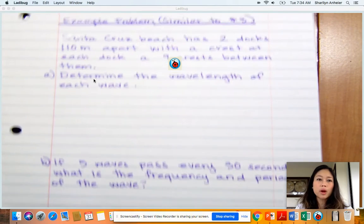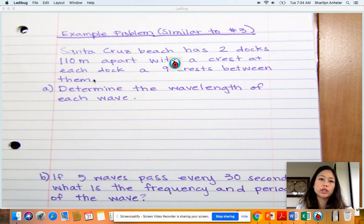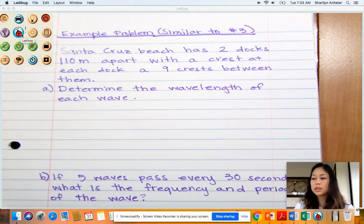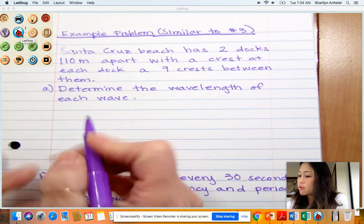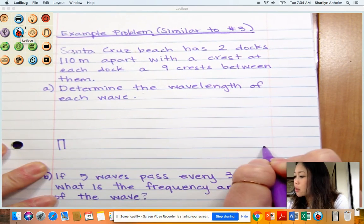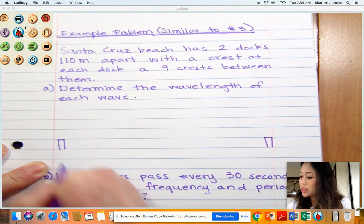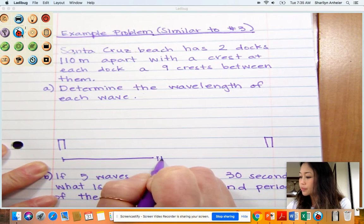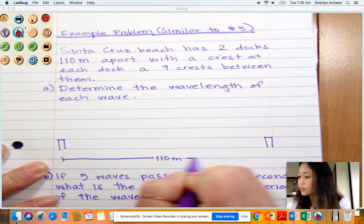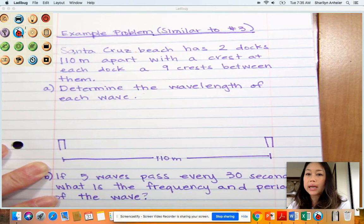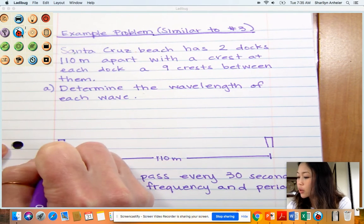Here's a problem I created very similar to number 3 on Worksheet 2. In this scenario we've got the Santa Cruz Beach with two docks 110 meters apart. A lot of you had trouble trying to figure out how to draw this. I just drew two docks here, 110 meters apart with crests at each dock and nine crests in between.